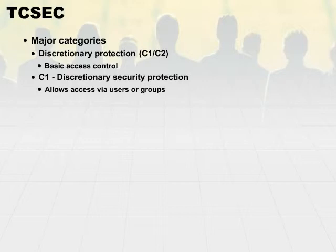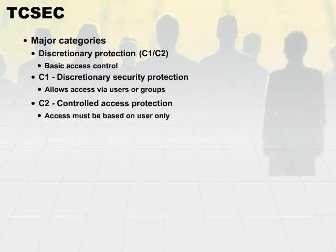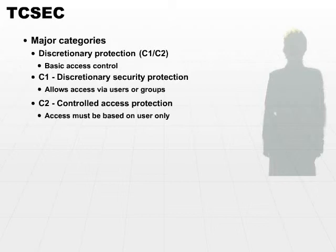Category C2 is slightly different and more secure than C1, called controlled access protection. In a C2 system, access must be based on a user only. It takes away the group concept and makes sure that access is tailored to a specific user. This results in higher administrative overhead, but is more specific and allows us to implement least privilege a little bit easier.